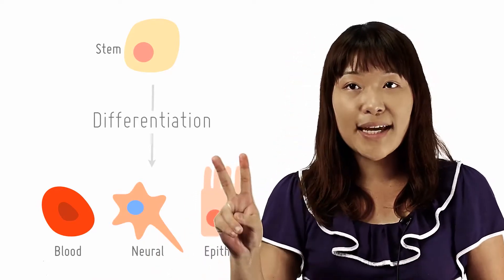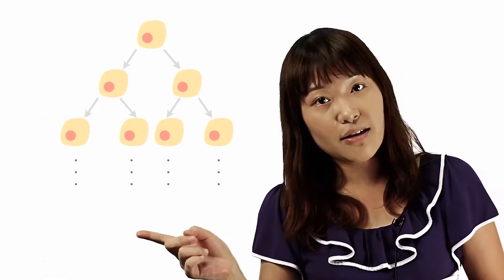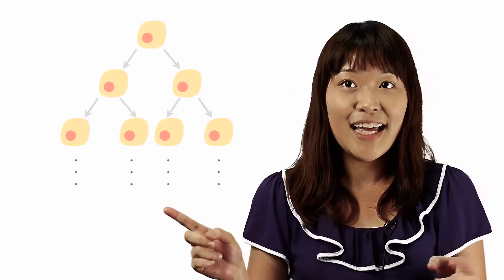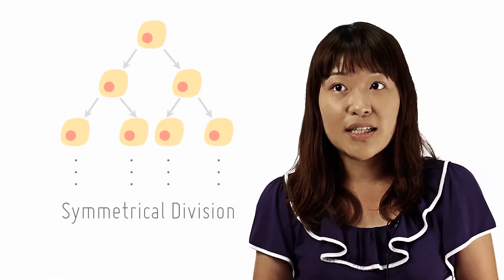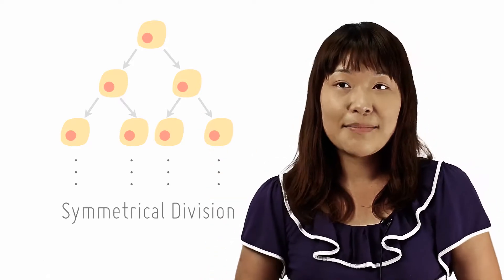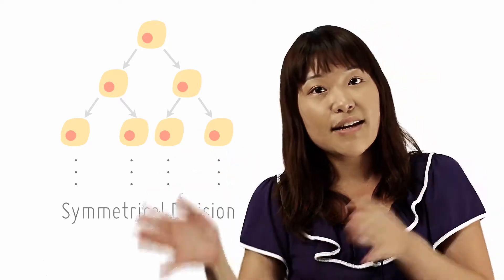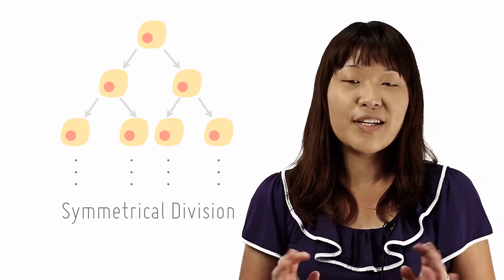There are two ways in which a stem cell can divide, namely symmetrical and asymmetrical division. If it undergoes symmetrical division, it will generate two daughter stem cells. So you have an increase in the amount of stem cells. Pretty straightforward.